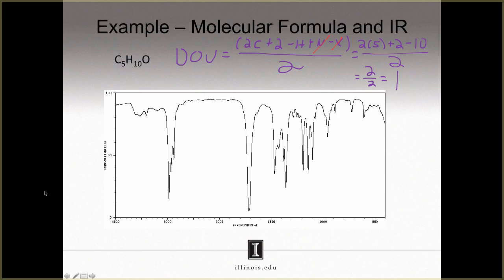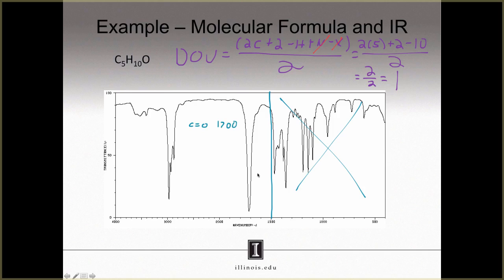Doing the arithmetic, we see that we have 2 over 2, or 1 degree of unsaturation. That means that we have 1 pi bond or 1 ring. Now let us begin interpreting the IR spectrum. We know that anything in the fingerprint region is not to be interpreted, so we can ignore everything on the right side. Going to higher wavenumbers, the first region we encounter would be the carbon-carbon double bond region around 1650 wavenumbers. We don't see any stretches there, so we do not have any carbon-carbon double bonds. The next region is for carbonyls at around 1700 wavenumbers, and indeed we do see a carbonyl stretch there.